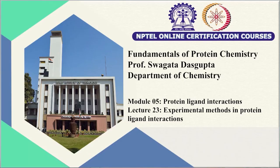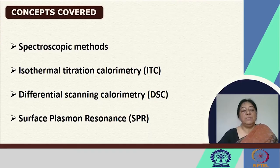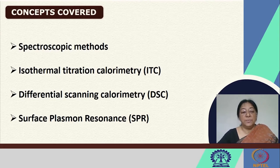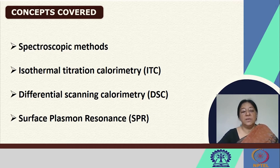We continue our discussion on protein-ligand interactions. In this specific lecture, we will be looking at experimental methods in protein-ligand interactions. The specific methods we will visit include spectroscopic methodologies, ITC (isothermal titration calorimetry), differential scanning calorimetry, and surface plasmon resonance. These are some of the techniques used to determine protein-ligand interactions that we have discussed in the previous lectures.